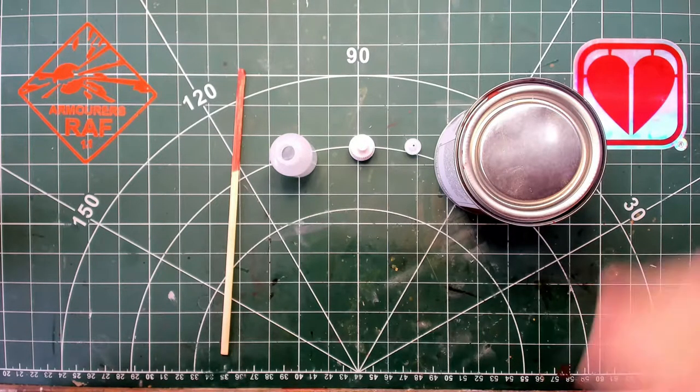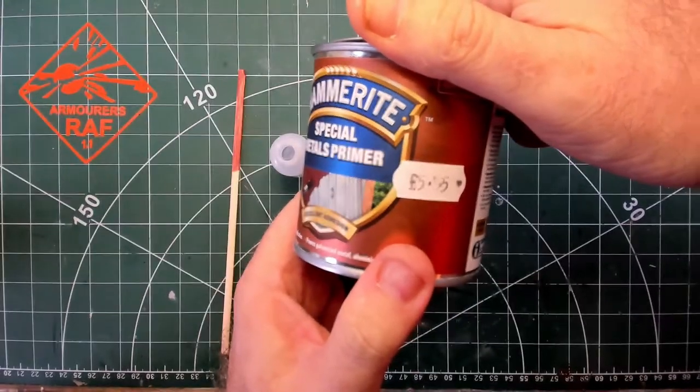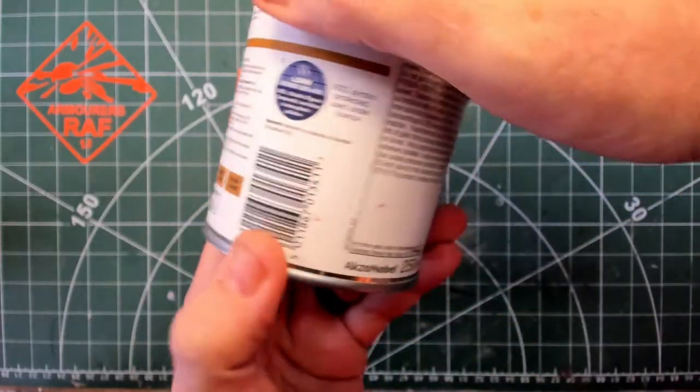So I went down to my local hardware store and found this Hammerite special metal primer for £5.55 for 250ml.